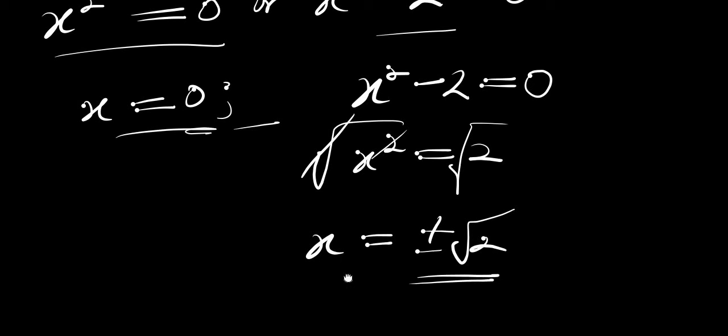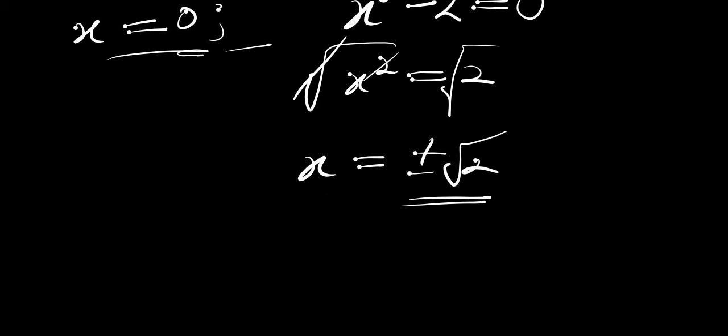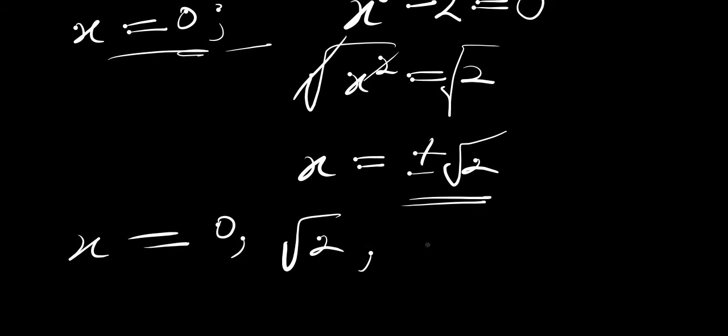At this point we have three different solutions: x equals 0, x equals positive root of 2, and x equals negative root of 2.